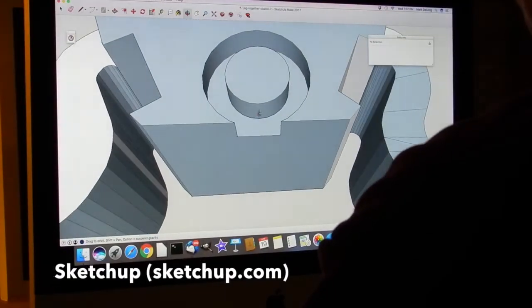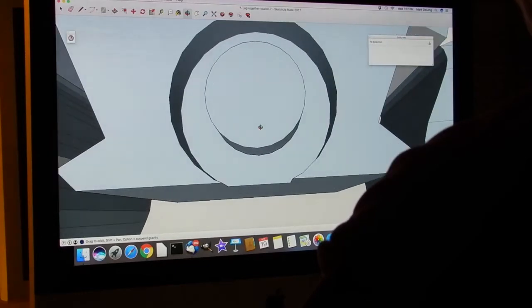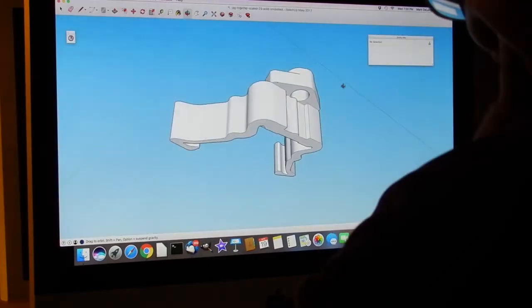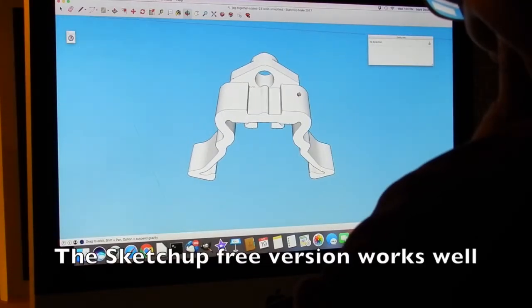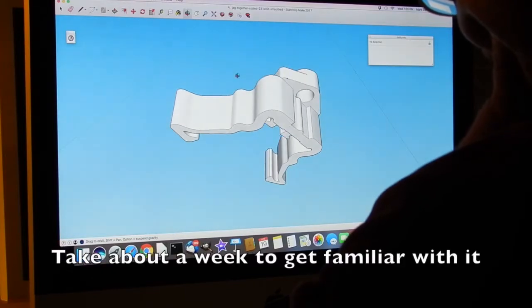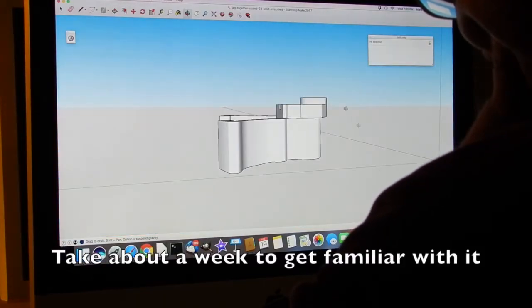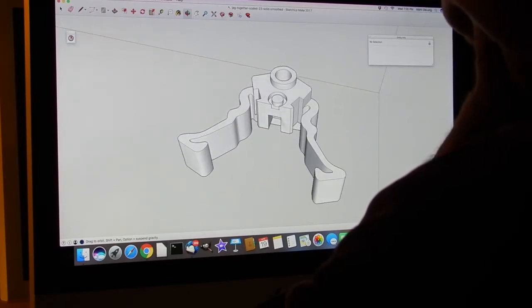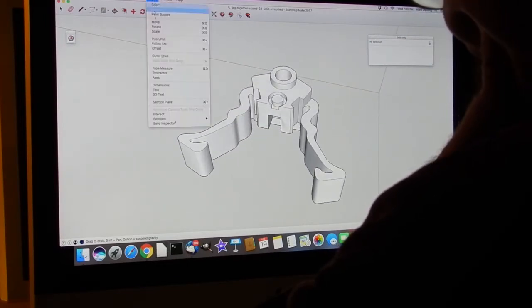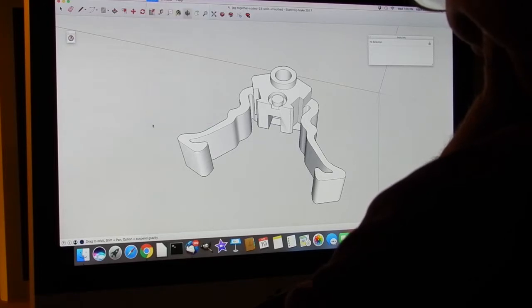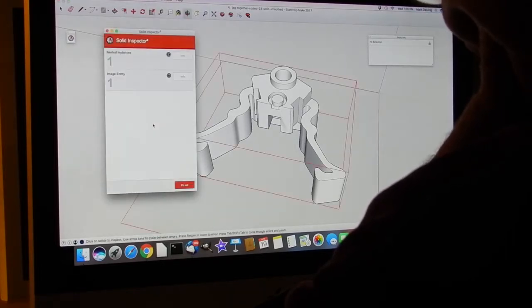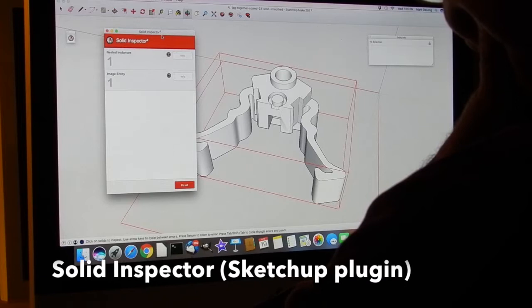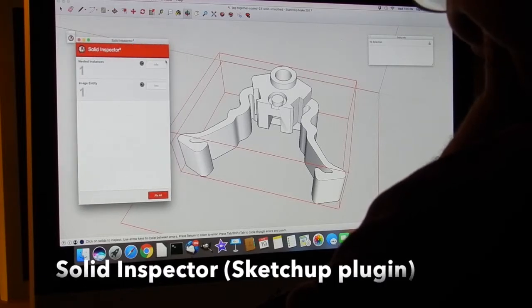I used SketchUp which is free online and it was a little putsy because you actually have to think about the entire model from its surface. SketchUp just does surfaces even though you actually need to do a solid. I used something called Solid Inspector to be able to make sure that the surface itself had integrity.